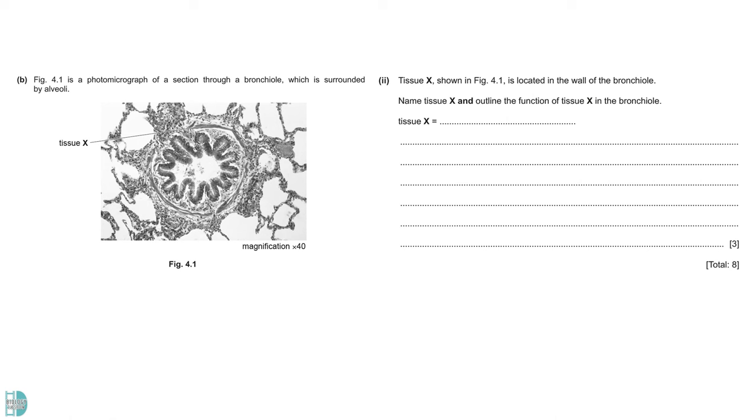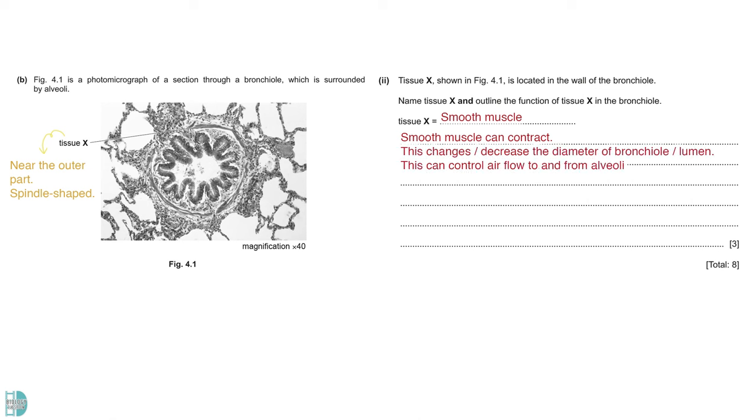The second question wants you to identify tissue X and outline its function. X is found at the outer part of the wall and the cells look spindle-shaped and long. It is smooth muscle. They can contract. By doing this, they can change or decrease the diameter of bronchiole. This can also control the airflow to and from the alveoli.